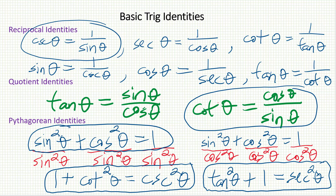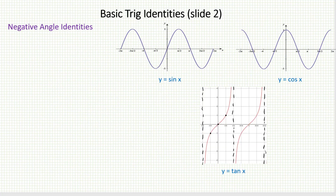These are helpful identities when you know one of the ratios and you're hoping to find another one — all identities you should commit to memory. With the Pythagorean identities, you can either memorize all three or remember the first one and learn the process of how to obtain the other two.